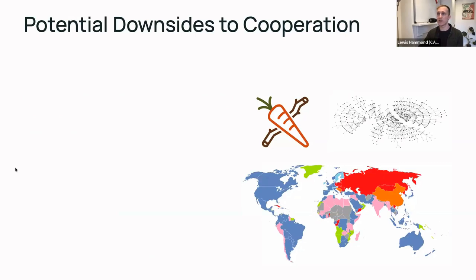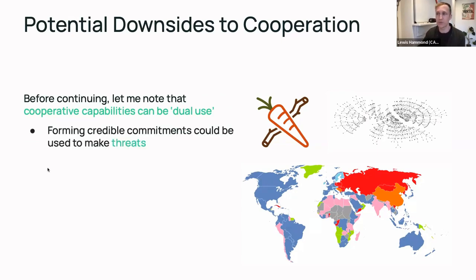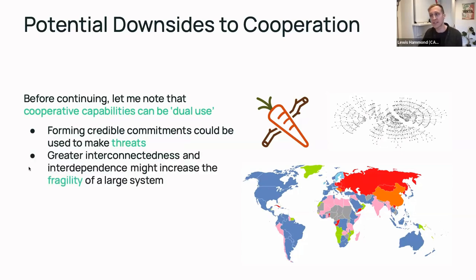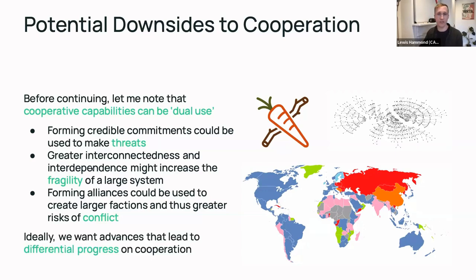Before continuing, I want to mention that there are downsides to cooperation as well, in the sense that cooperative capabilities can be dual-use. For example, forming credible commitments might allow us to reach agreements that would otherwise be difficult to enforce and yet might be mutually beneficial — and yet credible commitments can also be used to make credible threats. Similarly, greater interconnectedness and interdependence might increase the fragility of a larger complex system. Cooperation with negative externalities is essentially collusion — it's cooperation where we don't want cooperation.